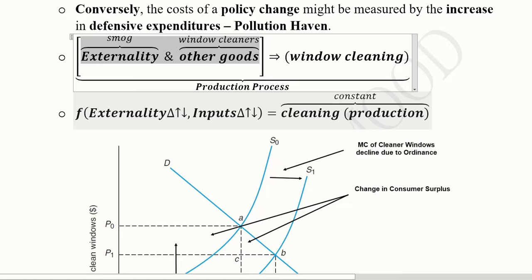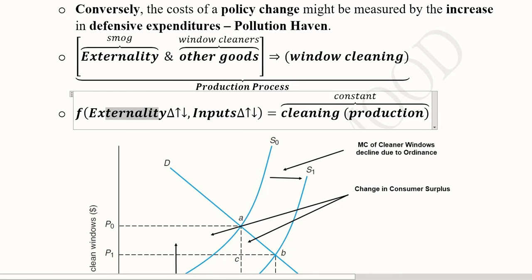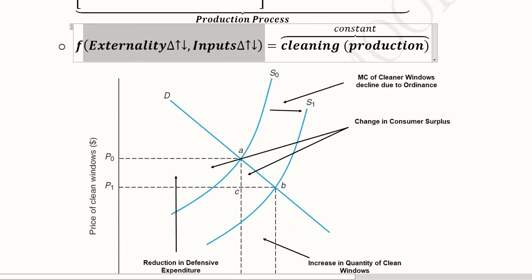If we want to consider the changes in these, if the externality of the smog or any other negative externality increases, it is going to require greater inputs. And if it decreases, it is going to require lesser inputs. So you see that in this way, the cleaning production will be an outcome of this couple of inputs, and they can balance each other in order to keep the cleaner windows at a constant level.